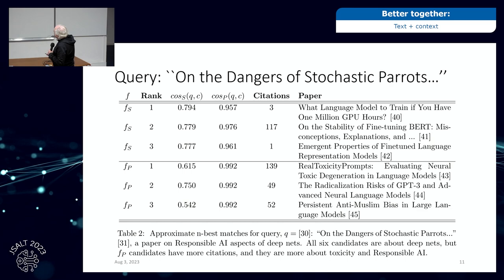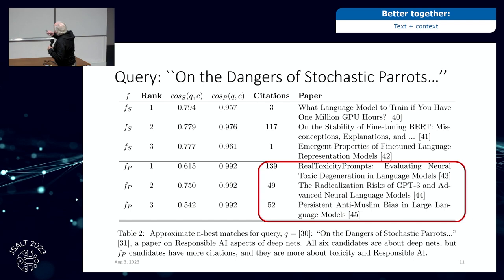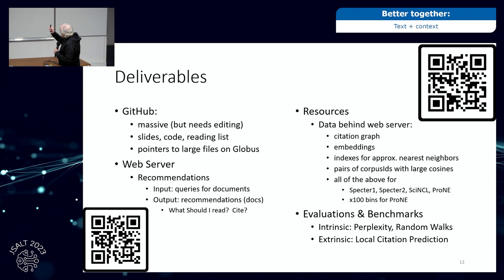Here's Emily Bender's paper on stochastic parrots — pretty highly cited. The things proposed by the ProNE method are all about toxicity. The ones higher up are vaguely on deep nets, but nothing really about toxicity. Toxicity is an important aspect of the query paper. Again, matching on the words in the abstract just isn't enough.